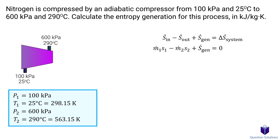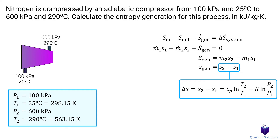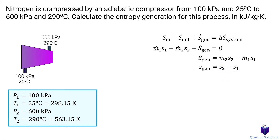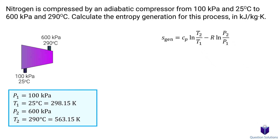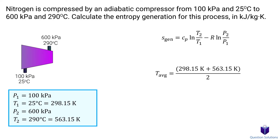Let's isolate the equation for entropy generated, then divide both sides by mass flow since the question wants the answer per unit mass. This simplifies to the change in specific entropy, which we can find using the ideal gas entropy change equation since we have both pressure and temperature values. We need the constant pressure specific heat Cp and the gas constant R for nitrogen from a table. First, we find the average temperature by adding initial and final temperatures and dividing by 2, which we need to look up the Cp value.